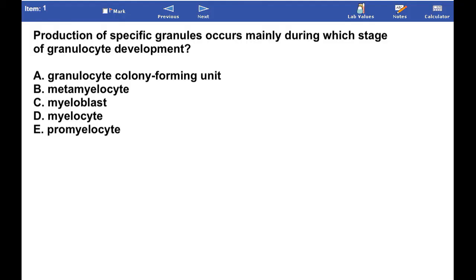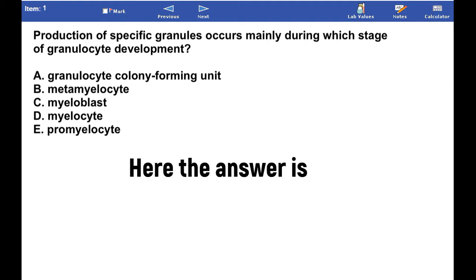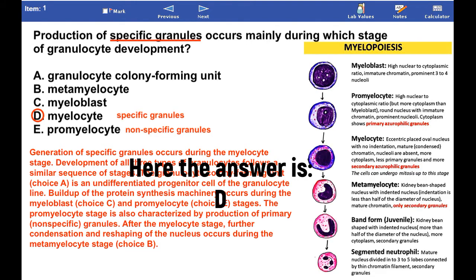Production of specific granules occurs mainly during which stage of granulocyte development? Pause and answer the question. Production of specific granules occurs during the myelocyte stage.